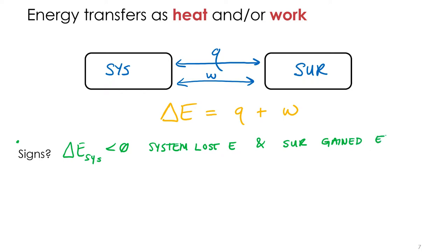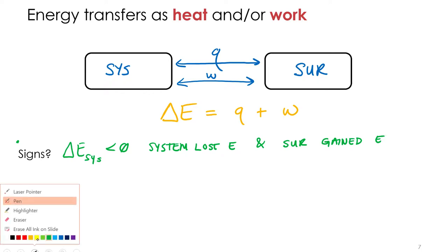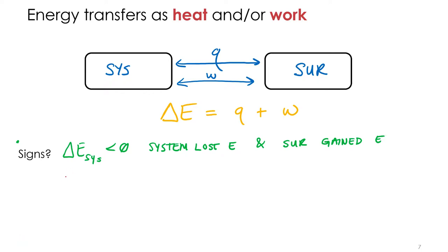Of course, we know they're equal in magnitude. System lost 10 joules, surroundings picked up 10 joules. 100 joules and 100 joules. What if the change in energy of the system was positive? That means the system gained energy. What else? Surroundings lost energy.